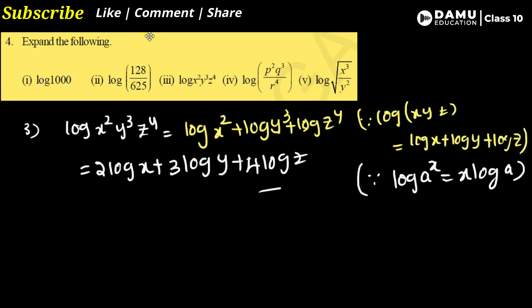Applying the power rule log(a^x) = x·log(a), the answer is 2·log x + 3·log y + 4·log z. We cannot expand further, so this is the final answer.